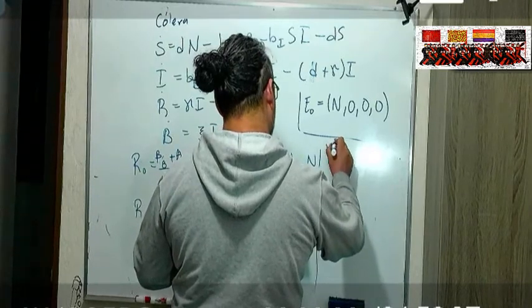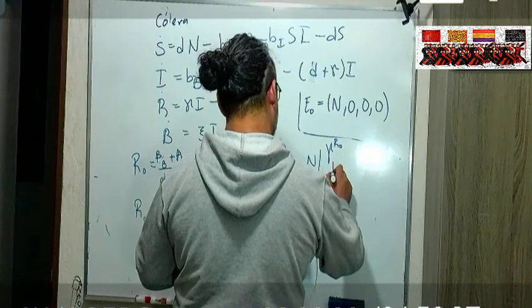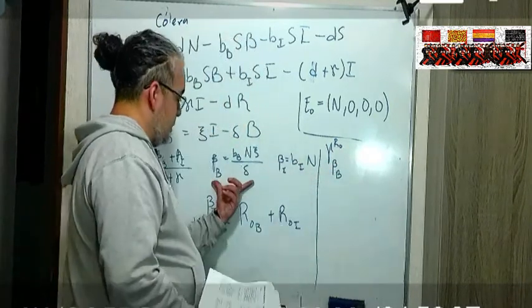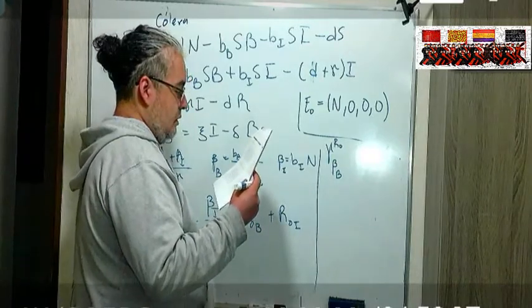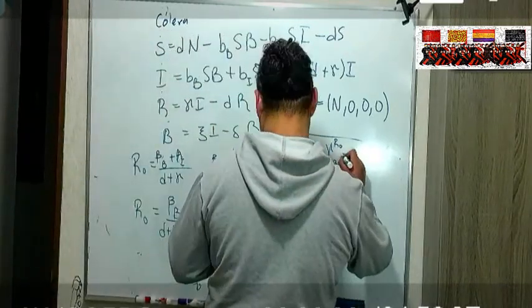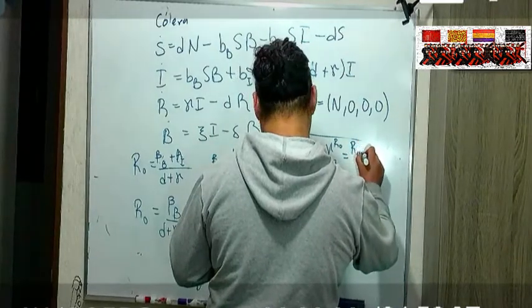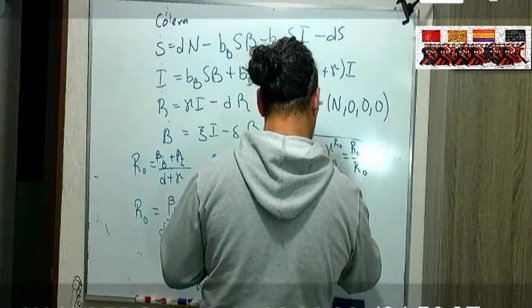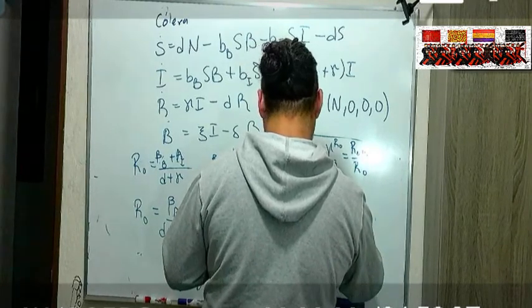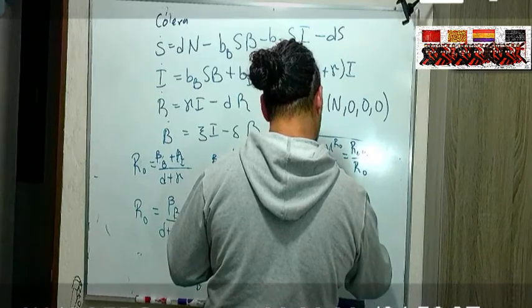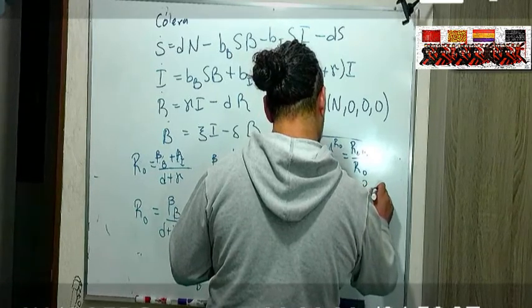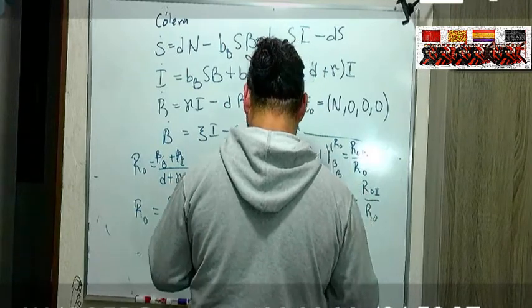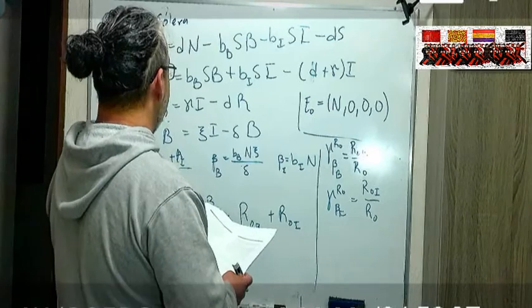Qué tan sensible es R0 respecto a la beta B, a esta beta B. Entonces esa es R0 B sobre R0. Y qué tan sensible es R0 cuando cambias beta I, pues eso no es más que R0 I sobre R0.